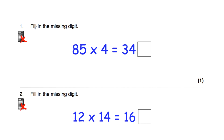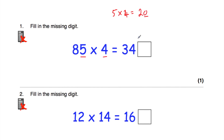Let's have a look at question number one. Question one says fill in the missing digits. We've got 85 times 4 is equal to 340 something, and we need to figure out the missing digit. We look at the end digits of the numbers we're multiplying: 5 and 4. Five times 4 is equal to 20. Because that ends in a 0, the end digit in our answer must be 0. So the answer is 3400, and the missing digit is a 0.